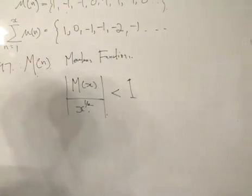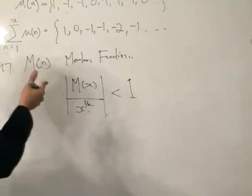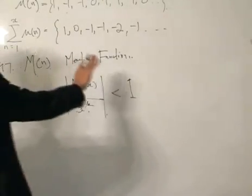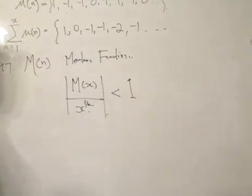He took a lot of values and verified this. We leave Mertens on one side, because this was the first function that he really conjectured.